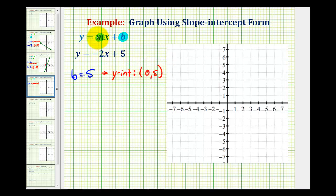And m, which is the coefficient of x, would be equal to negative 2, and m is the slope.